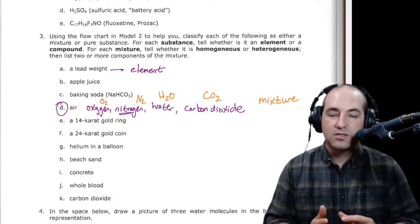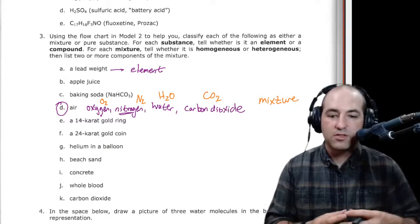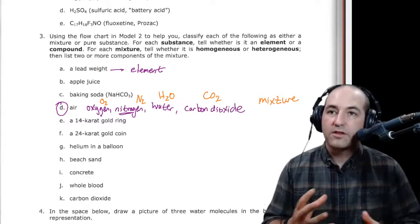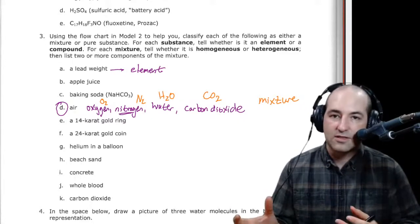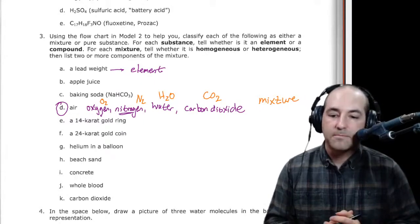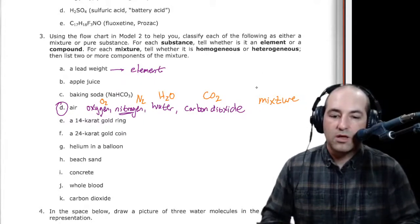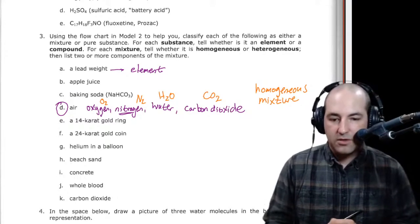So now we have to decide, is it homogeneous or heterogeneous? Homogeneous mixture is uniform throughout. Heterogeneous, you can determine the different parts of it. Well, with air, all the different molecules are diffused pretty evenly throughout. We don't have oxygen on this side of the room and nitrogen on this side of the room. So we can pretty confidently call air a homogeneous mixture. And that's how that works.